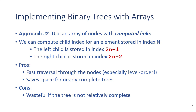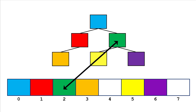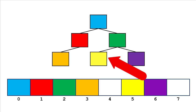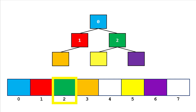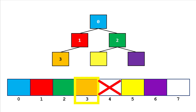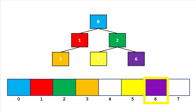The downside is that if the tree is not relatively complete, this can waste a lot of space. In a well-formed example, the root is stored at index zero, its right child at index two times zero plus two, which is index two. The green node's left child, the yellow node, is stored at index two times two plus one, which is five. You'll notice nodes are essentially stored in level order — root at index zero, its children at indices one and two, their children at indices three through six — so traversing the array gives you a level-order traversal.